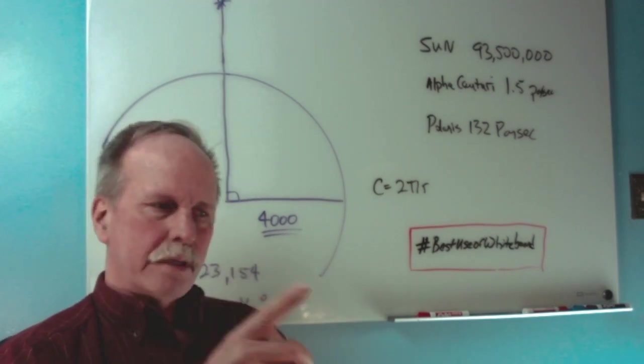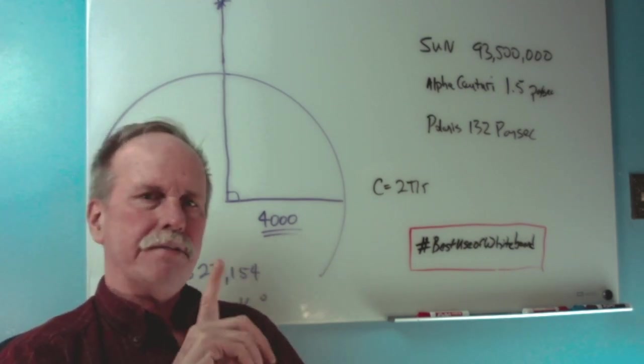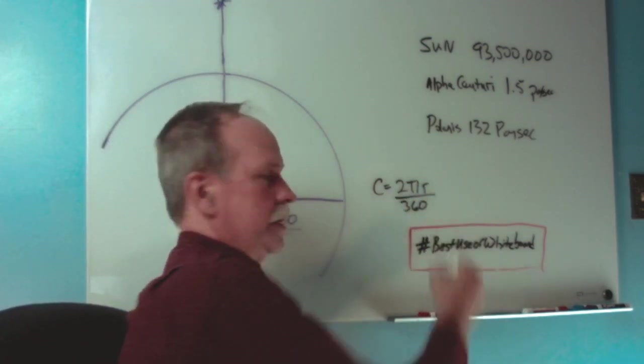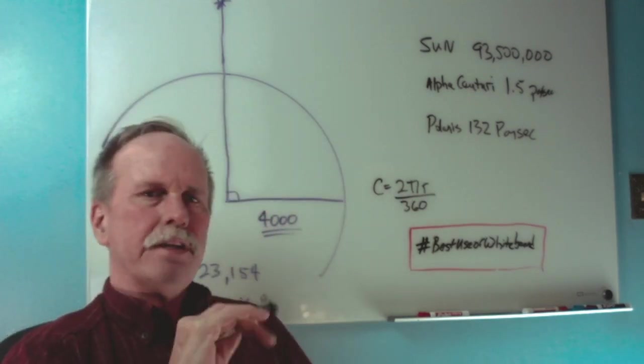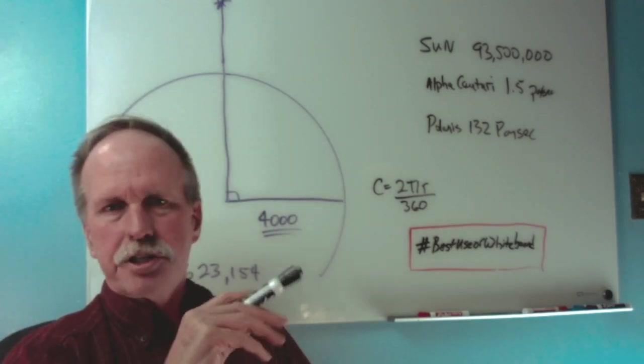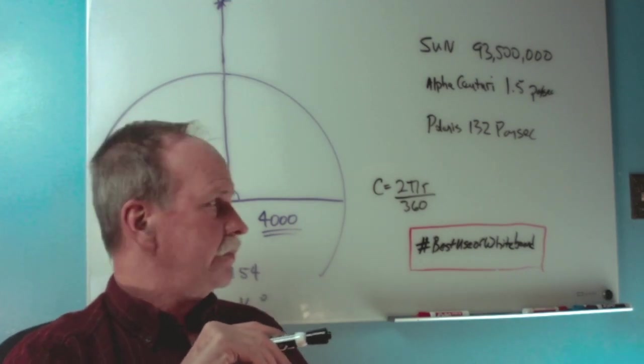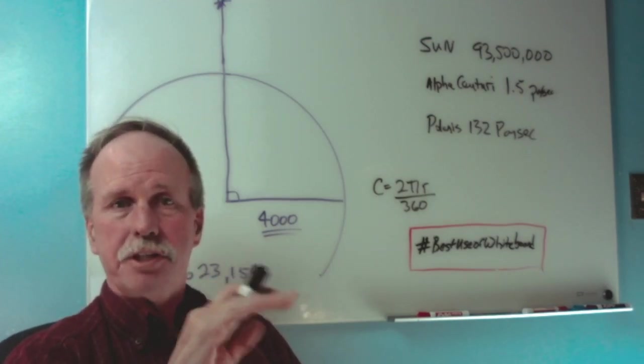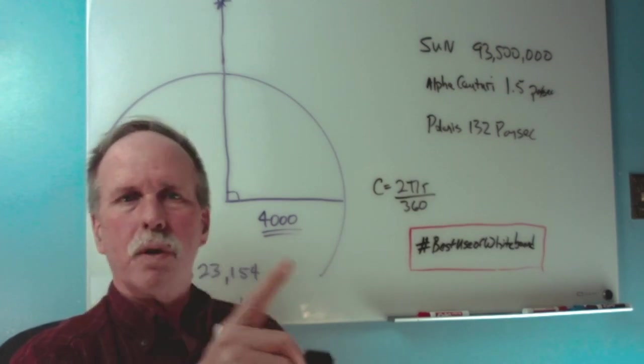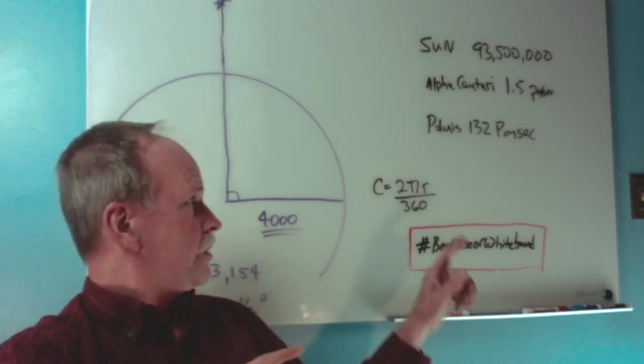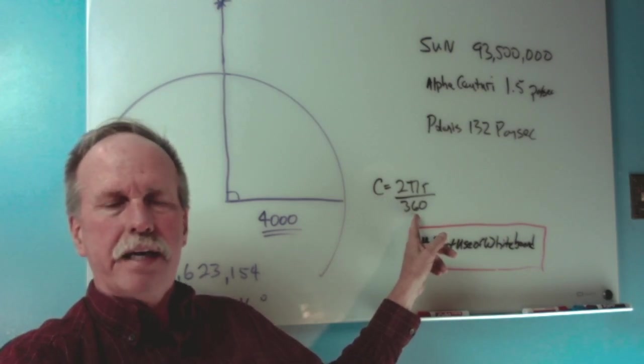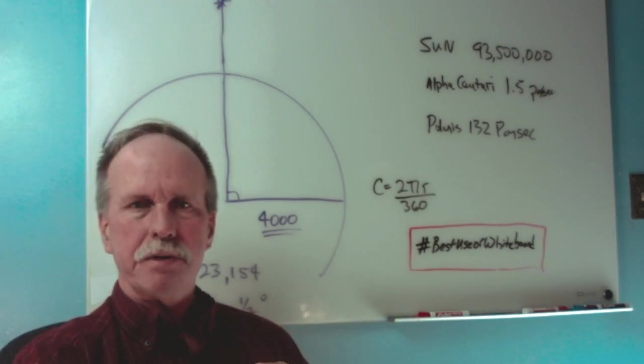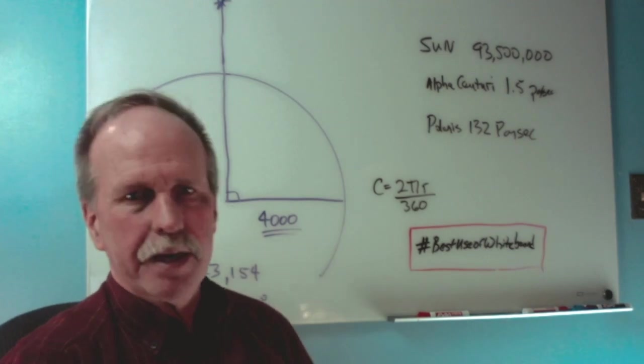That would give you a circumference with 360 degrees in it. If you look at 1 degree, all you would have to do is take that value and divide it by 360. So even though the Earth's orbit is slightly elliptical, we're just going to look at it as a circular orbit right now. So if you take 93 and a half million miles, multiply that by pi times 2, you get the circumference of the orbit of the Earth. If you divide that by 360, you find out how much the Earth moves in one degree of that orbit, which is about the distance it moves once a day.